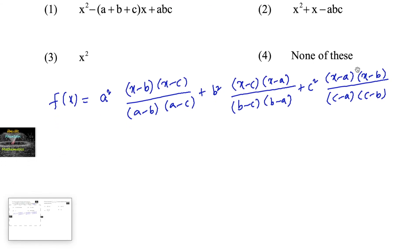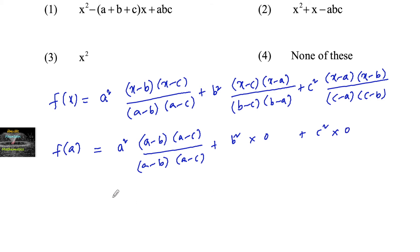So here clearly we can see that by taking x equal to a, we'll get a squared times a minus b times a minus c divided by a minus b times a minus c. And b squared - when I substitute x equals a this becomes zero. Here also, c squared times x - when x equals a this is zero. So we're getting f of a is equal to a squared.